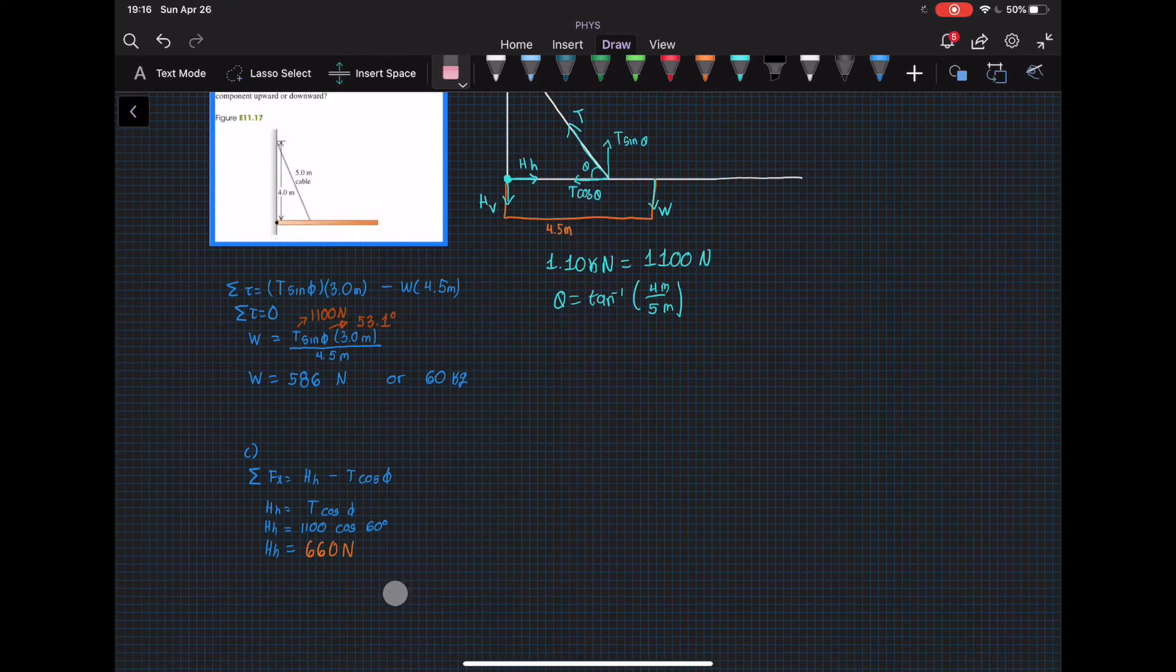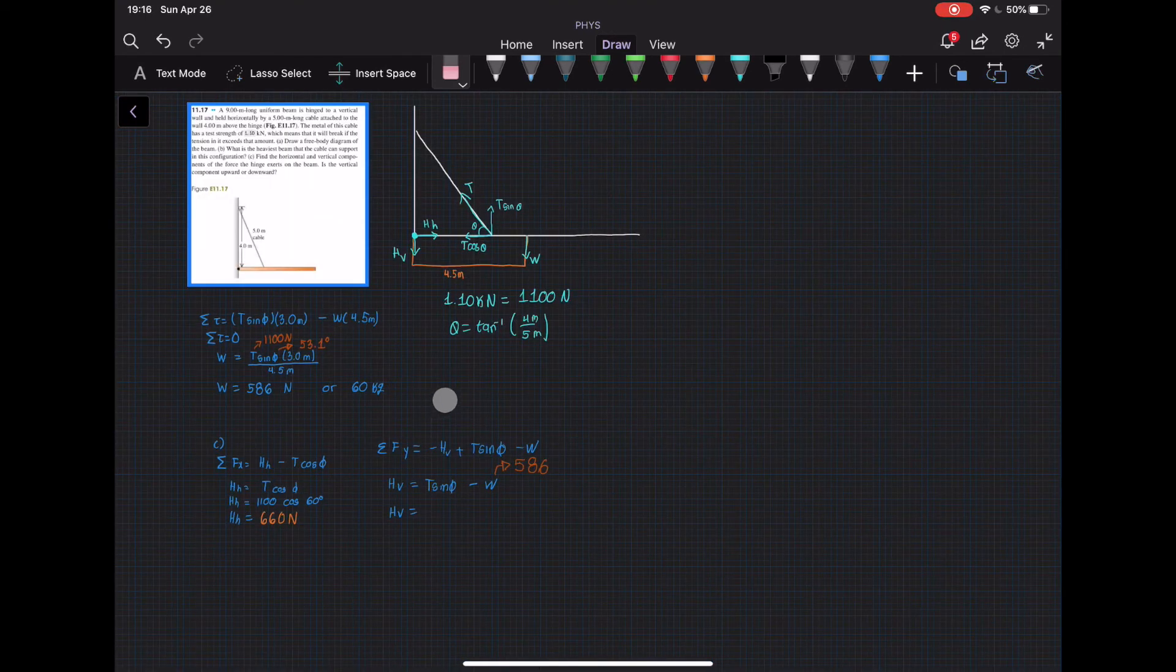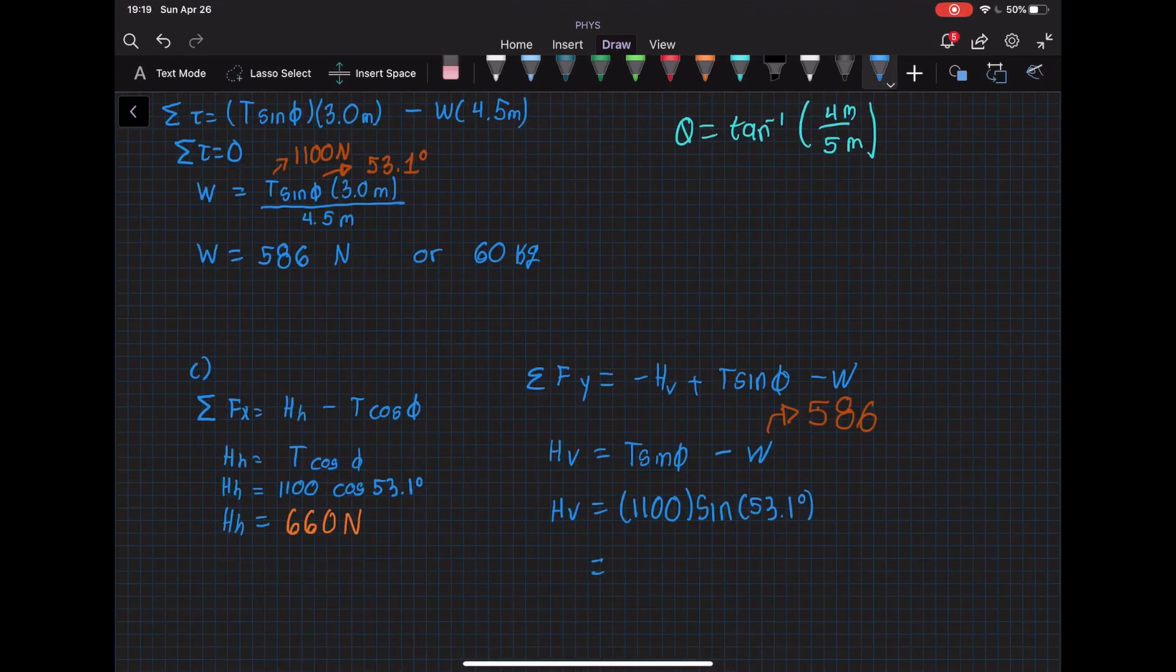We do the sum of the forces in the y-direction which is negative hinge vertical and positive T sine theta minus the weight which we found on this side right here. And now we can start plugging numbers and we get negative 293 newtons which is in the negative direction.